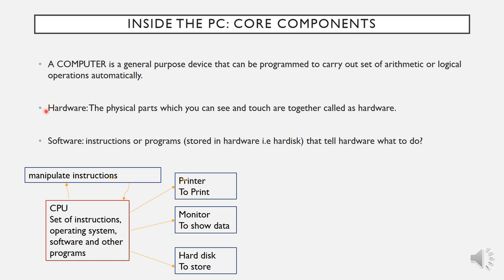Now we will go for hardware. The physical components or physical parts which you can see and touch are together called hardware. Software refers to instructions or programs stored on hardware. Software is basically installed on hardware — installed on the hard disk. The hard disk is inside the CPU. That software, that set of instructions, will tell other hardware devices what to do.